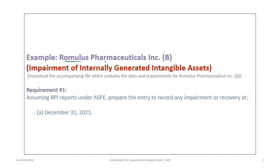This tutorial is based on the Romulus Pharmaceuticals Inc. B example, so please make sure you download the correct file which contains the data and requirements for this particular problem and review it in advance. The Romulus example used in this tutorial is an extension of the example used for Tutorial 23A, which was based on recognition of internally generated intangible assets. However, the approach demonstrated here is applicable to both internally generated or purchased intangible assets.